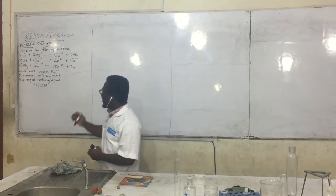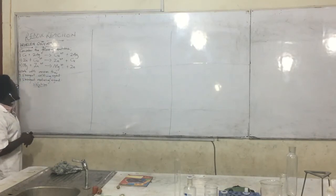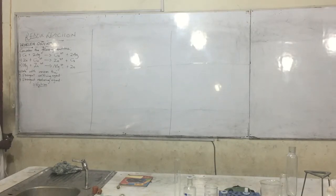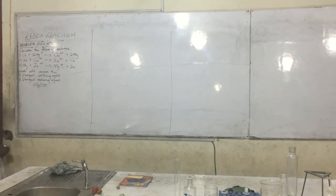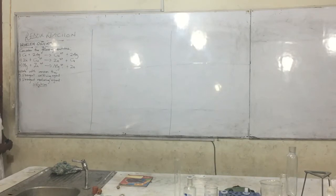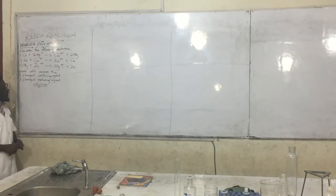We have a very nice question that says: consider the following reactions. The first is Cu plus 2Ag+ produces Cu2+ plus 2Ag. The second is Zn plus Cu2+ produces Zn2+ plus Cu. The third is Mg plus Zn2+ produces Mg2+ plus Zn.